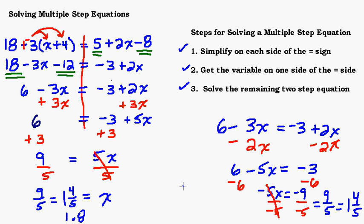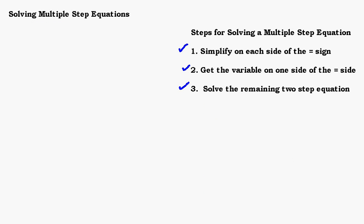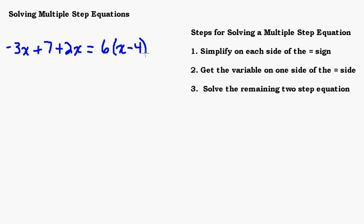Alright, those are the steps. Let's have you try one on your own. Here's the next problem: negative 3x plus 7 plus 2x equals 6 times the quantity x minus 4 plus 10. If you want, pause the video, try it yourself, then turn it back on and see how you did — that's a great way to practice.